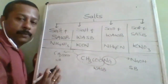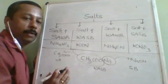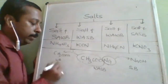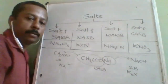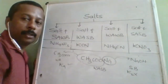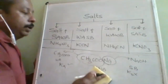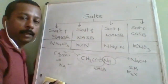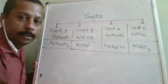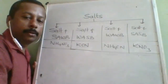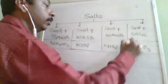Whichever component is weak, only that will have a dissociation constant. In WA+SB, only Ka is available — Kb will not be there because the base is strong. When something is strong, there is no dissociation constant for it. So Ka is for the weak acid and Kb is for the weak base.